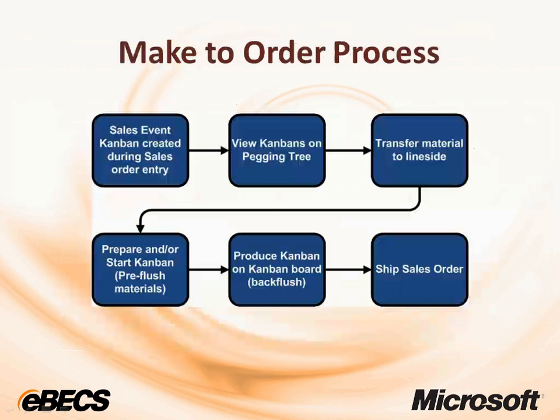We're going to cover the make-to-order process. We'll start with entering a sales order which will generate a sales event Kanban, and that specifically will signal the final assembly cell that we're going to produce this part for a particular sales order. We'll then look at the pegging tree where we can view the Kanbans that are make-to-order or pull-to-order Kanbans required for this particular sales order line.